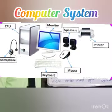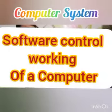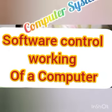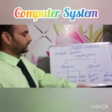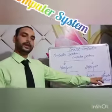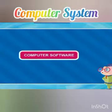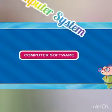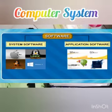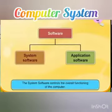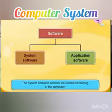Next is software. What is software? Software is a set of programs that tells a computer what to do. Software controls the working of a computer. There are two types of software: system software and application software.